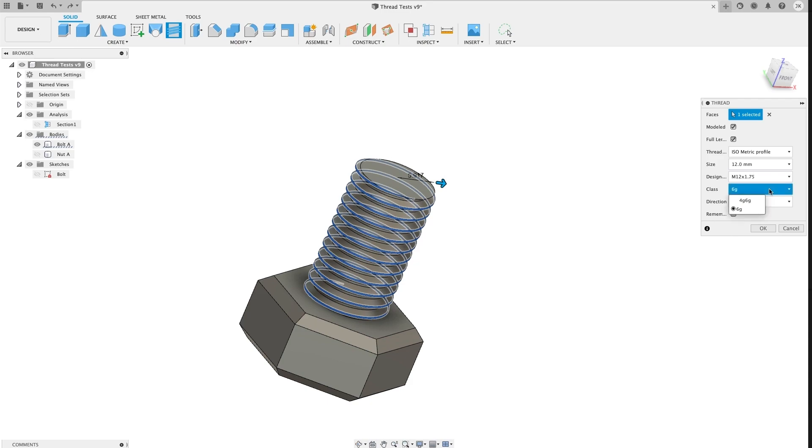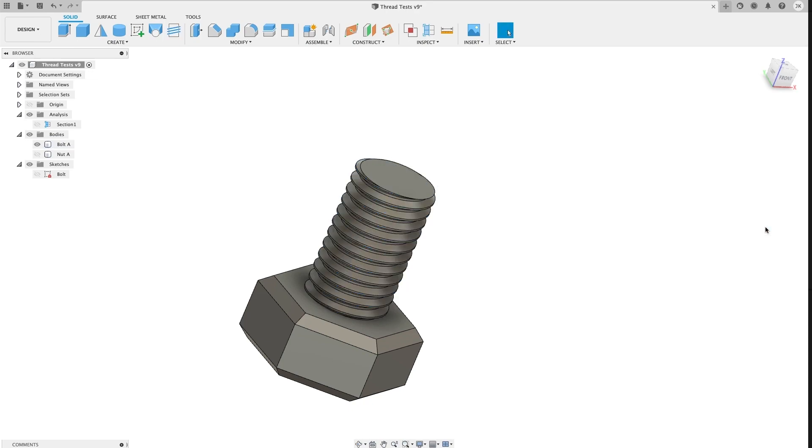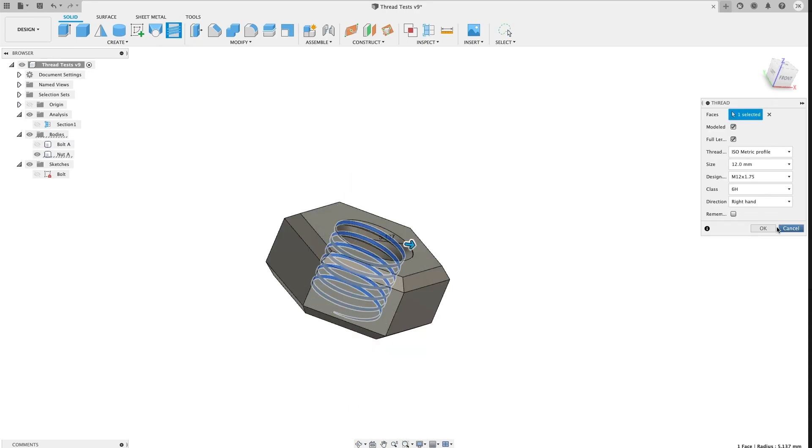Unless you have some particular reason to change it, stick with the default class value. This will create our initial clearance, and we can tweak it manually later. Now just repeat this process with the mating surface.